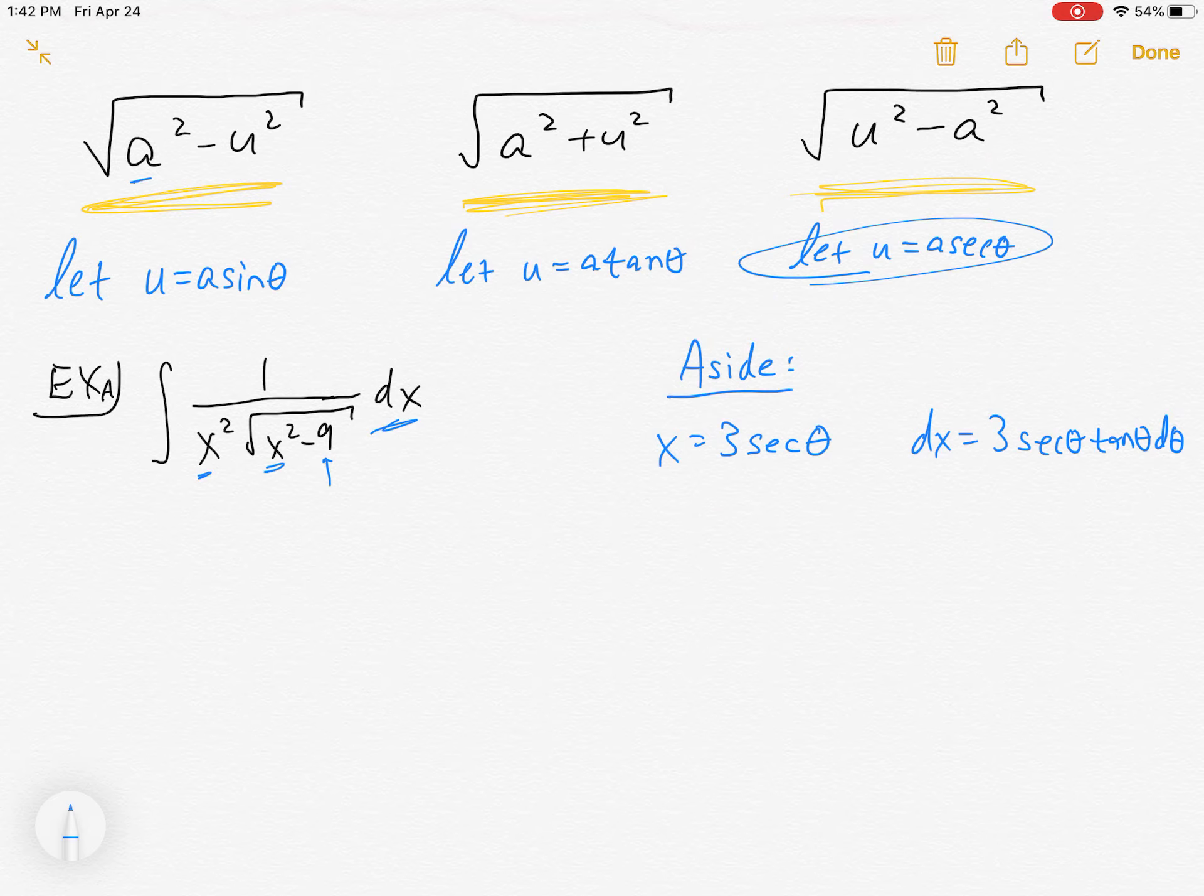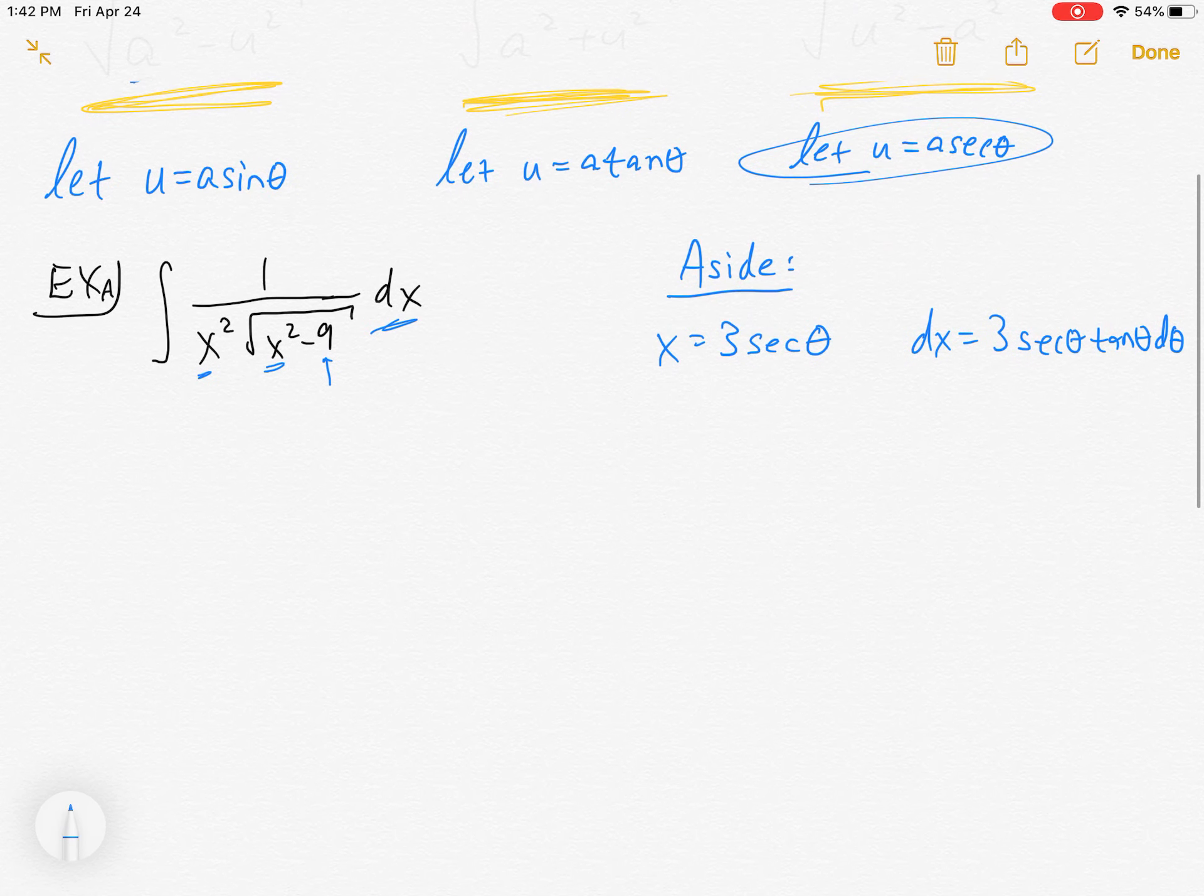We're going from the x world to the theta world. Before I plug in, we are going to need a dx. Actually we should be calling this x, not u. We're going from the x world to the theta world. Let's go ahead and do our dx right away. That's going to be 3 secant theta tangent theta d theta. Now you might be tempted to plug in here and there and then simplify. You could do that, but what I found is it's much easier to do a lot of simplification on the side. This is how I'm going to train you to do it.